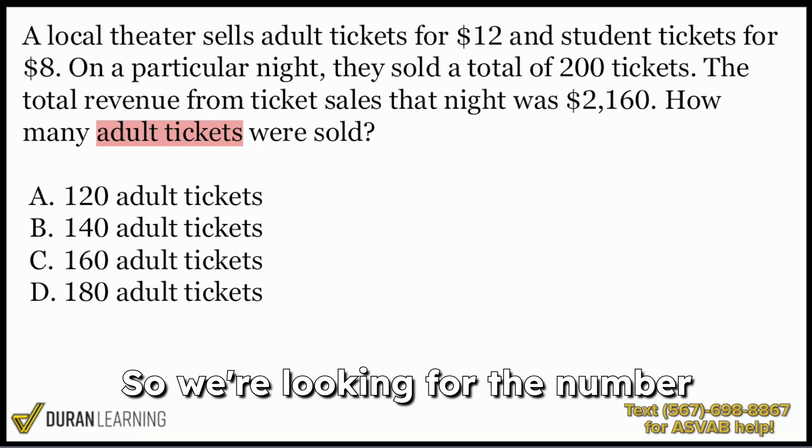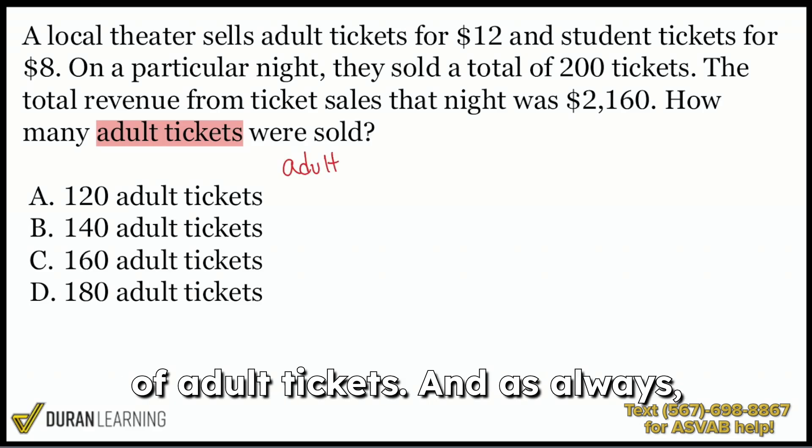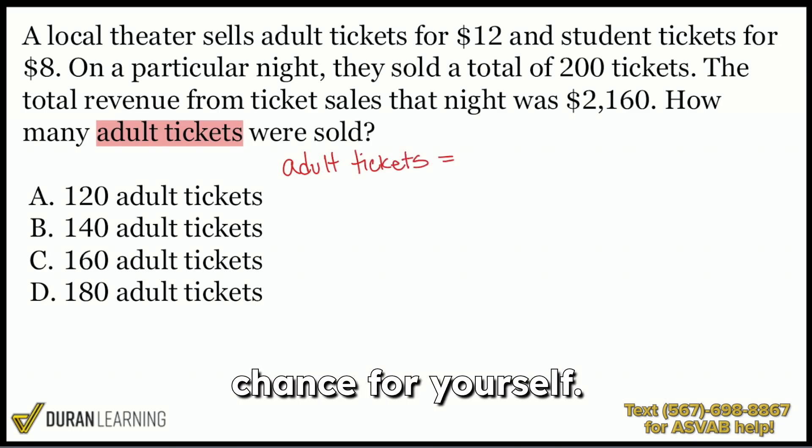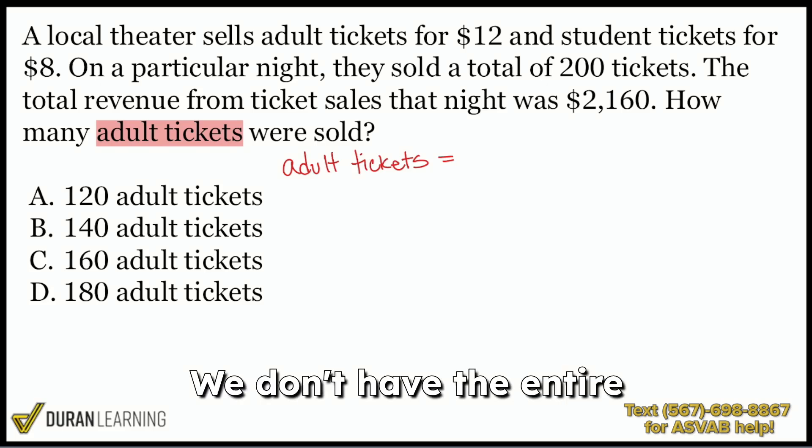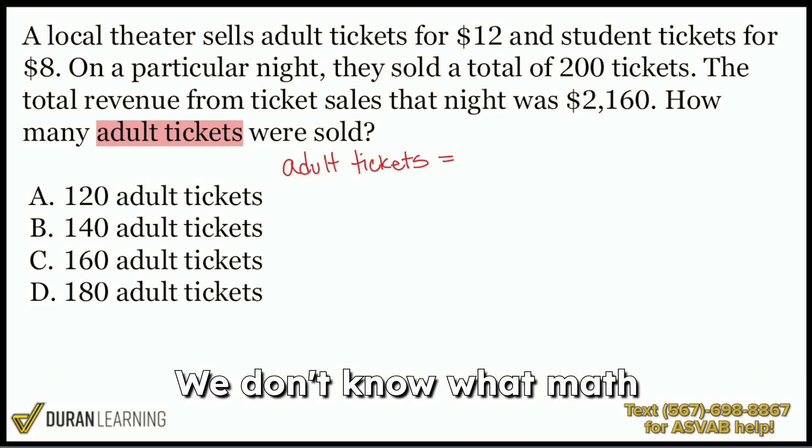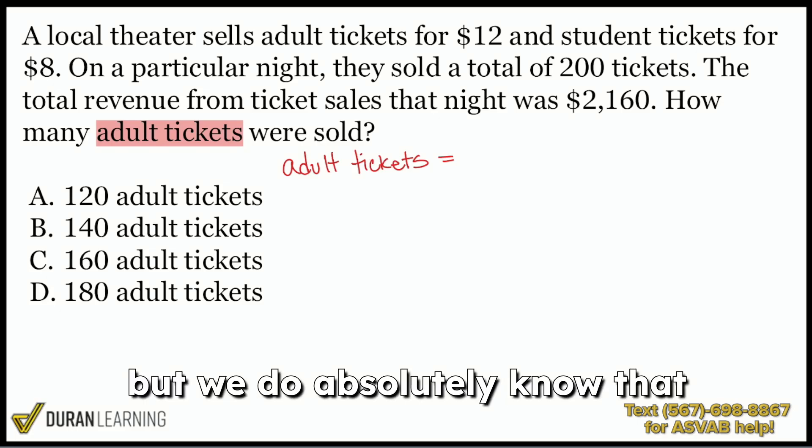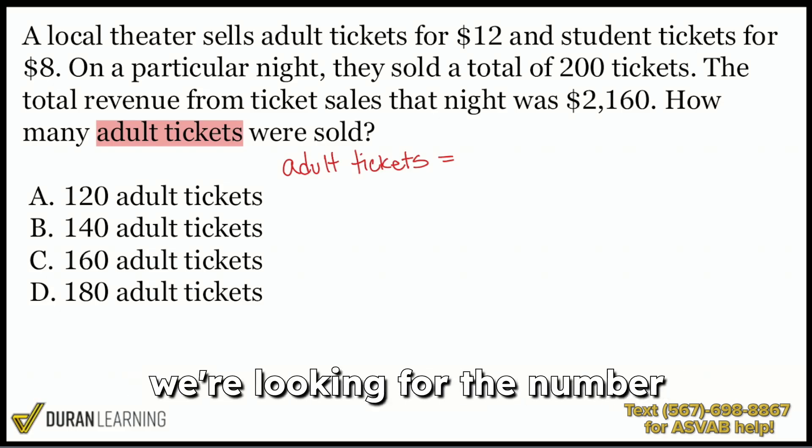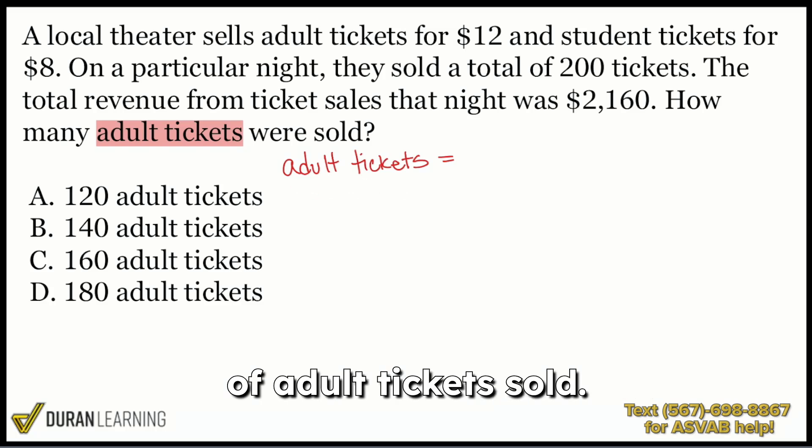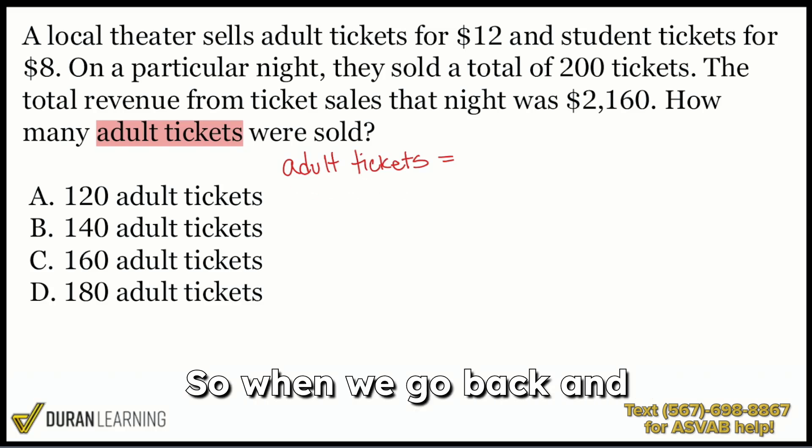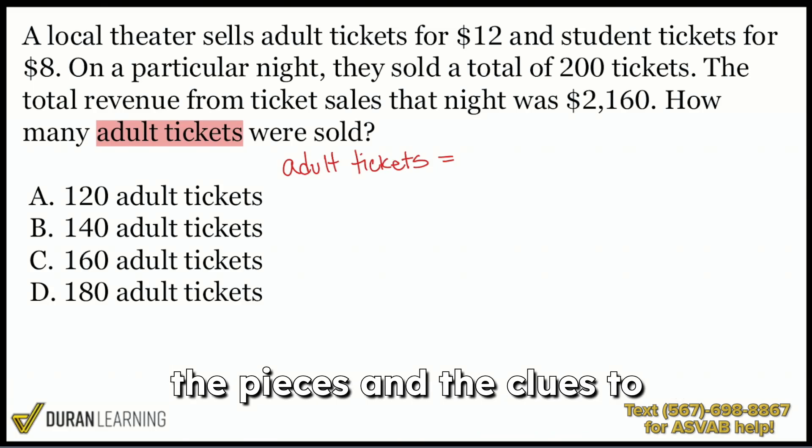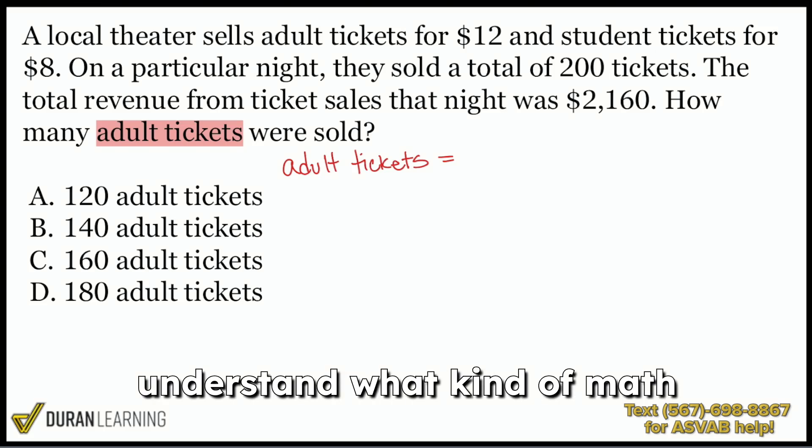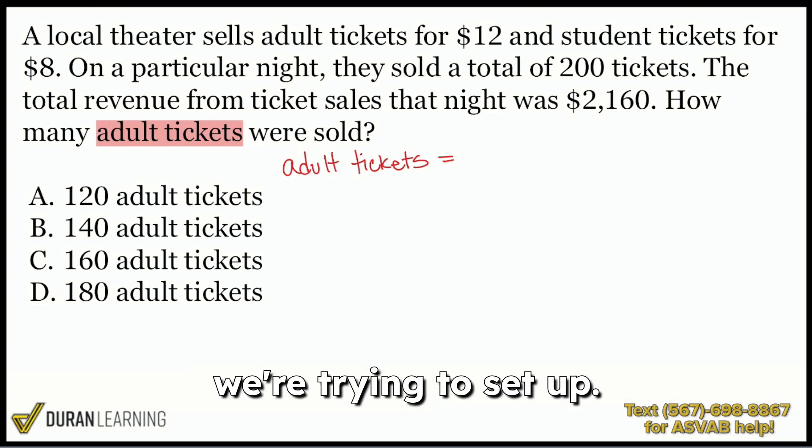So we're looking for the number of adult tickets. And as always, make sure to pause the video if you want to give this a chance for yourself. So we know what we're looking for. We don't have the entire context yet. We don't know what math we need to do, but we do absolutely know that we're looking for the number of adult tickets sold. So when we go back and read the information, this is where we're going to get the pieces and the clues to understand what kind of math we're trying to set up.